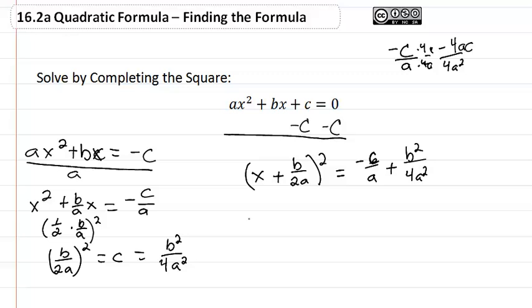Okay, so that means that we get x plus b over 2a quantity squared equal to b squared over 4a squared minus the 4ac.